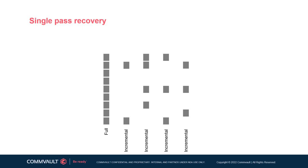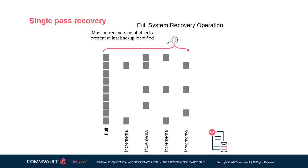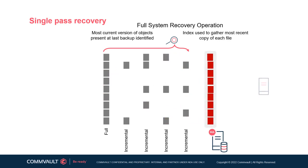Let's assume the server experiences a catastrophic failure and needs to be recovered. The Commvault media agents index all data written to the storage target, so the administrator can view all backed-up data from any point in time, regardless of backup type. When recovery is initiated, Commvault software identifies the most current version of objects present after the last backup, leveraging the media agent index to gather the most recent copy of each file. Commvault software intelligently combines the latest full backup with subsequent incremental backups to present a point-in-time image.